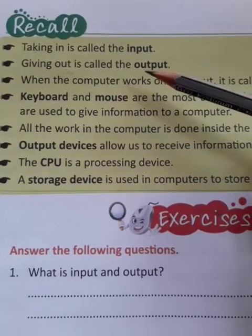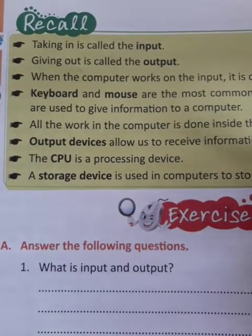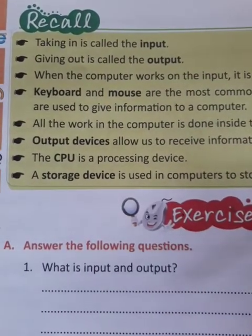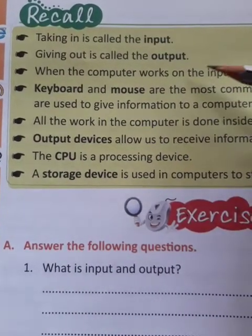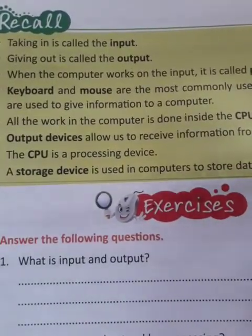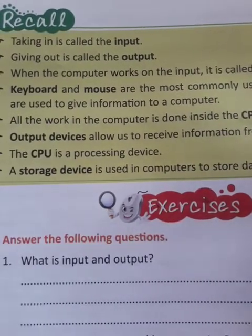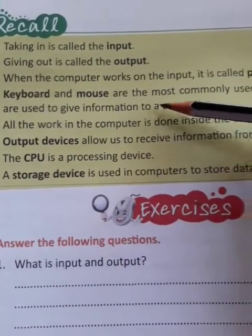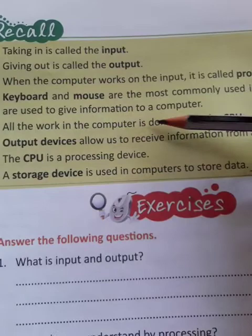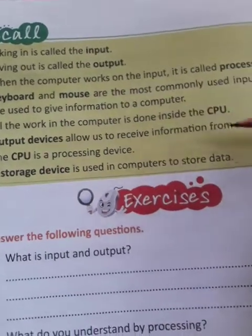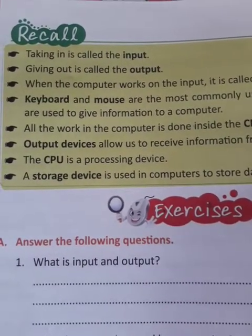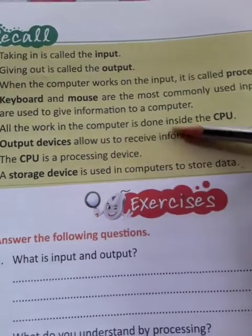Taking in information is called input. Giving out information is called output. When the computer works on the input, it is called processing. Keyboard and mouse are the most commonly used input devices, used to give information to a computer. All the work in the computer is done inside the CPU.